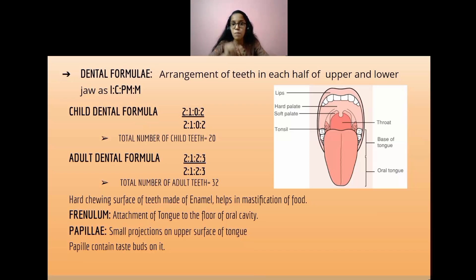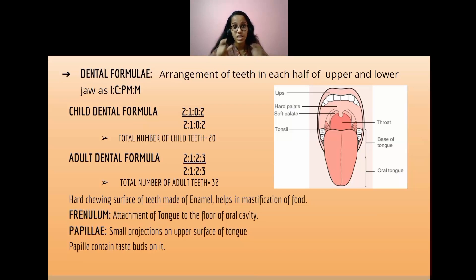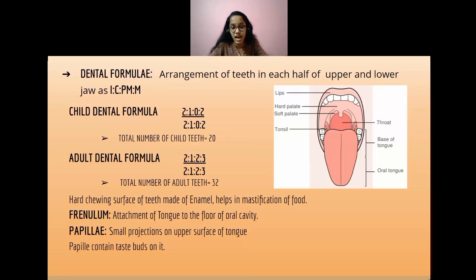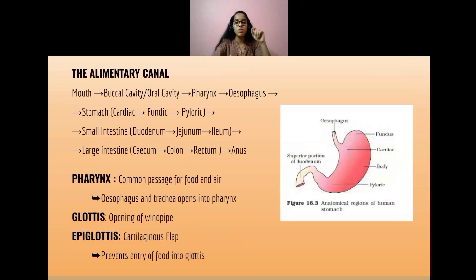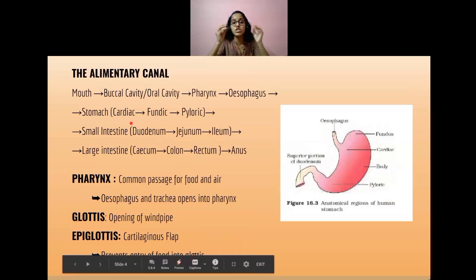The frenulum is the part of attachment of the tongue to the floor of the oral cavity. Papillae are small projections on the upper surface of the tongue, and papillae contain small taste buds on them.